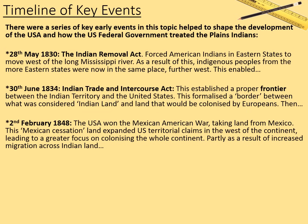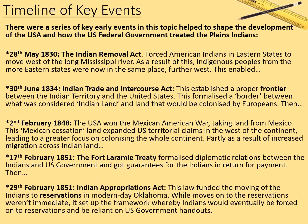Partly as a result of increased migration across Indian land, there were these two events. On the 17th of February 1851, the Fort Laramie Treaty was signed, which formalized diplomatic relations between the Indians and the US government and got guarantees from the Indians in return for payment. Then on the 29th of February 1851, the Indian Appropriations Act — this law funded the moving of the Indians to reservations in modern-day Oklahoma. While moves to the reservations weren't immediate, it set up the framework whereby Indians would eventually be forced onto reservations and be reliant on government handouts.